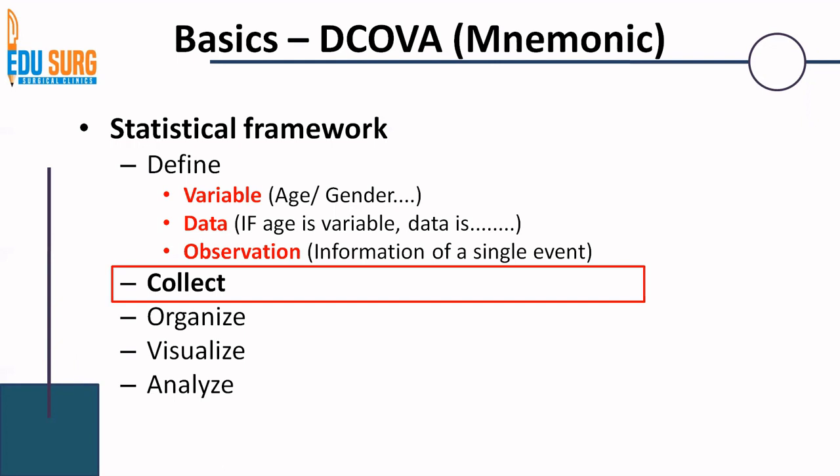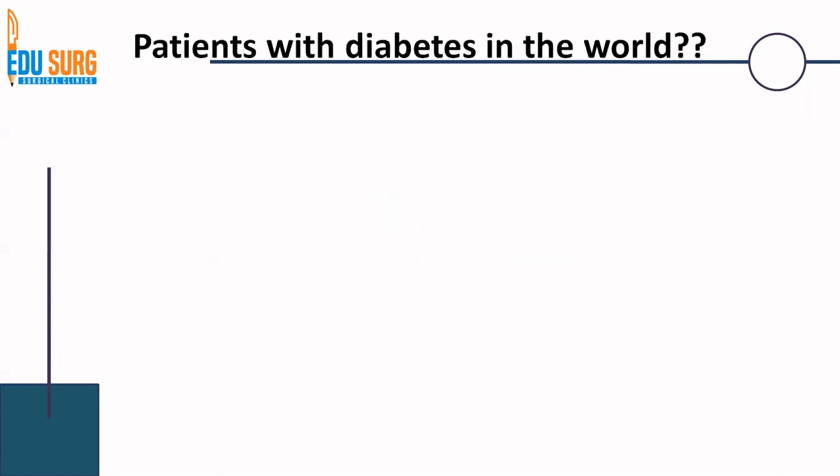Today we are going to discuss only two terms: what is a population, why we need a sample, and what is a sample. This is a simple video but these terms are important because they lead to a lot of confusion when we discuss statistics, and that is why this video is going to focus on clarifying these two terminologies.